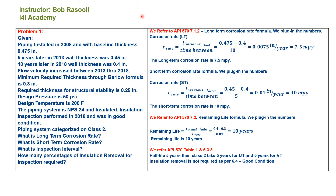We refer to API 570 7.1.2, the Long-Term Corrosion Rate formula. Plugging in the numbers, the long-term corrosion rate is 7.5 MPY.